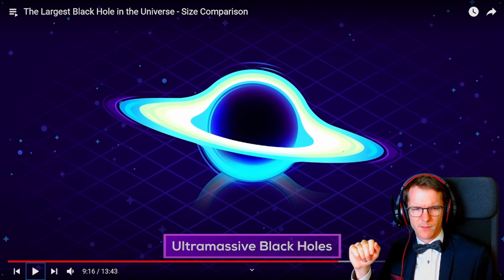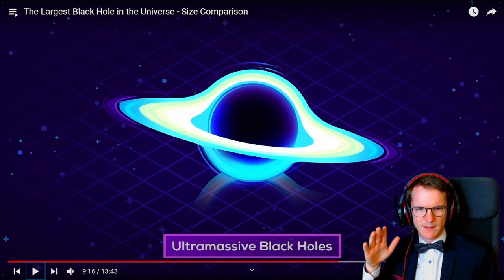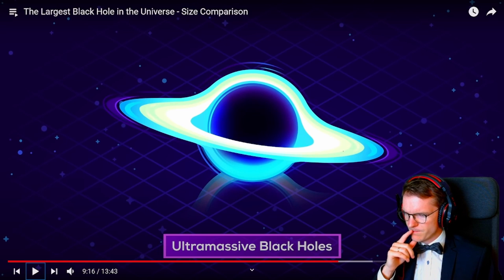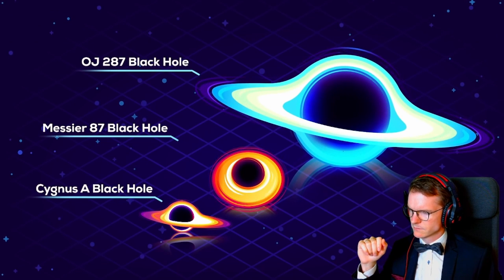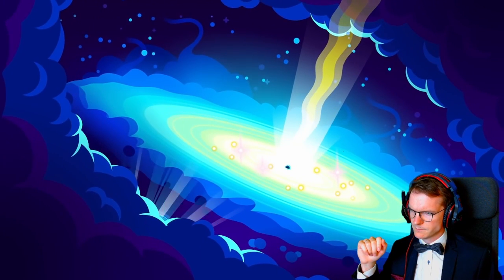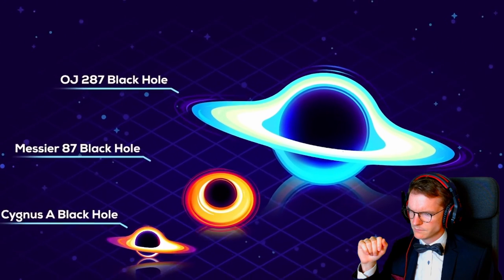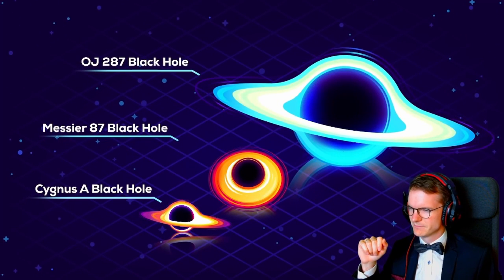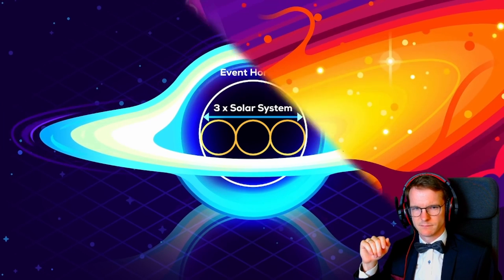We know that quasars are these very large, very early black holes — he's completely right. The name 'ultra massive' is very recent — I've never heard it. The ultra massive black hole at the center of galaxy OJ 287 is 18 billion solar masses. It's so big that it has a supermassive black hole nearly 40 times larger than Sagittarius A* orbiting it. It can comfortably fit three solar systems side by side inside of it.